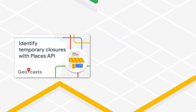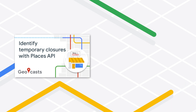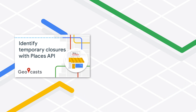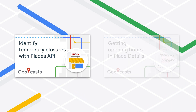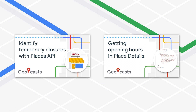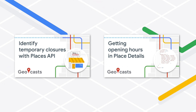For more details about how to use business_status and the client-side SDKs, see the detailed video for developers. We also have a related video about fetching the opening hours and current open status of a place.